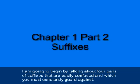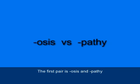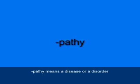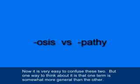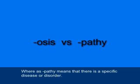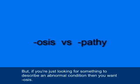I'm going to begin by talking about four pairs of suffixes that are easily confused and which you must constantly guard against. The first pair is OSIS and PATHY. OSIS means abnormal condition. PATHY means a disease or a disorder. One way to think about it is that OSIS is somewhat more general — it just means something's wrong — whereas PATHY means there's a specific disease or disorder. So when you see the word disease or disorder, you're looking for PATHY, but if you're describing an abnormal condition, you want OSIS.